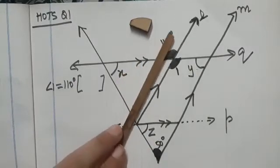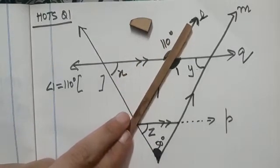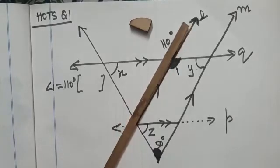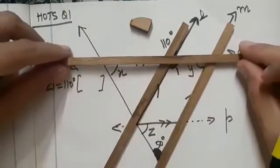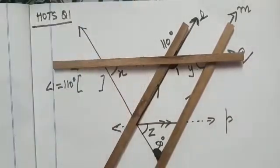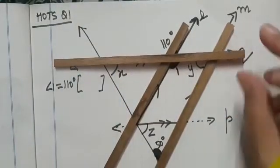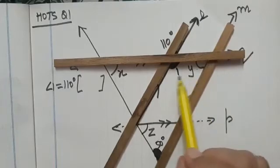Now observe line L and line M. They are parallel to each other, and we see Q is transversal. What relationship do you see in angle 1 and Y?